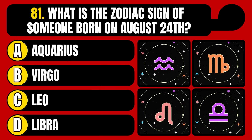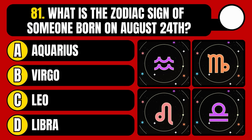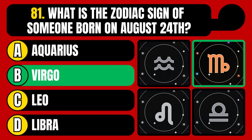What is the zodiac sign of someone born on August 24th? Aquarius, Virgo, Leo, or Libra? The correct answer is option B, Virgo.